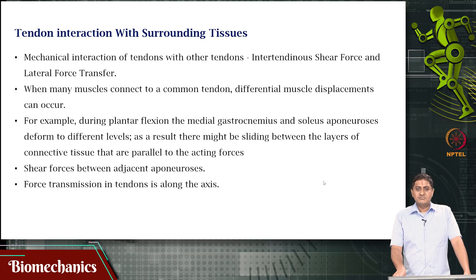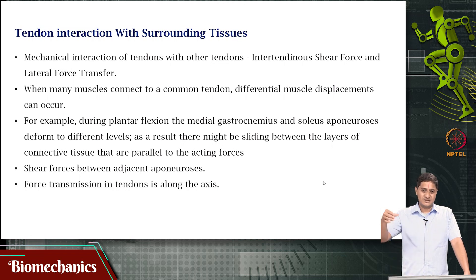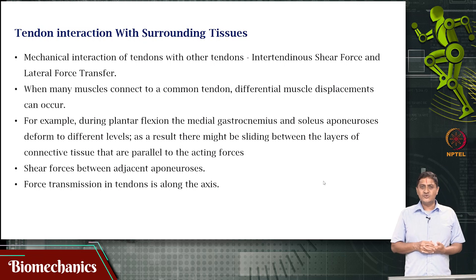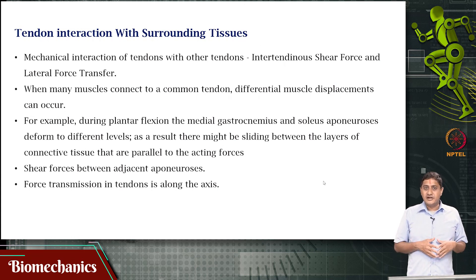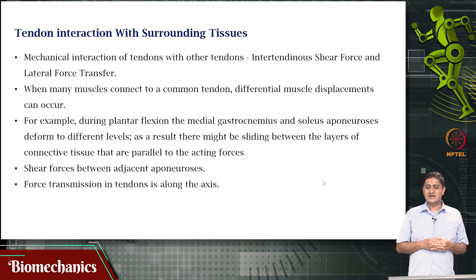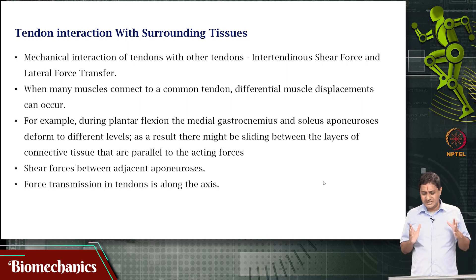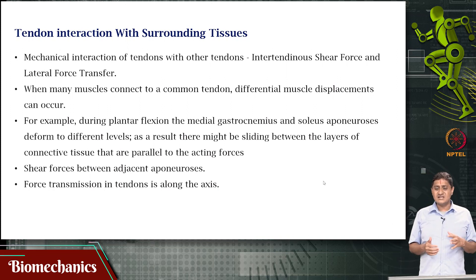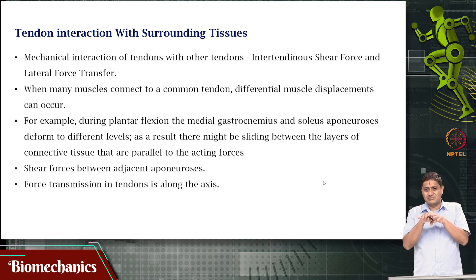Force transmission in tendons is mostly assumed to be along the long axis of the tendon, where the fibers are oriented along that axis. Usually you would assume that most of the force is transmitted longitudinally — you might assume 100 percent efficiency in force transmission, but that is not a very reasonable expectation. Some forces also get transmitted laterally. Here we discuss the special case of the situation when tendons shear between each other.